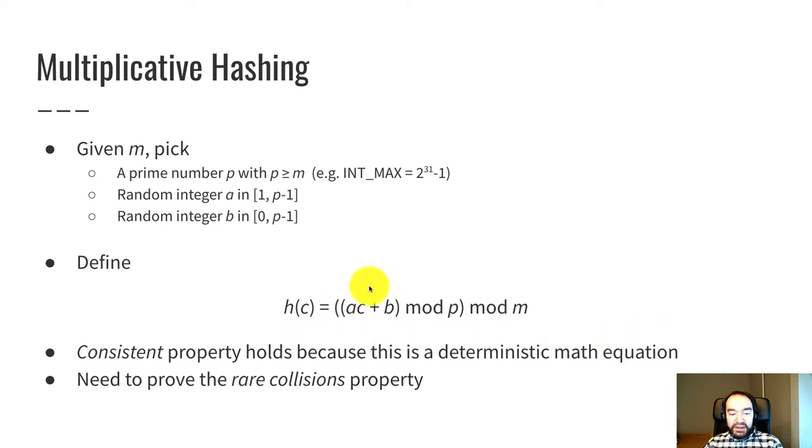The consistent property holds kind of automatically because this is a deterministic math equation. When we create h, we decide on a particular value of a, b, p, and m that are locked in. So every time you evaluate this for a given c, you're going to get the same number.